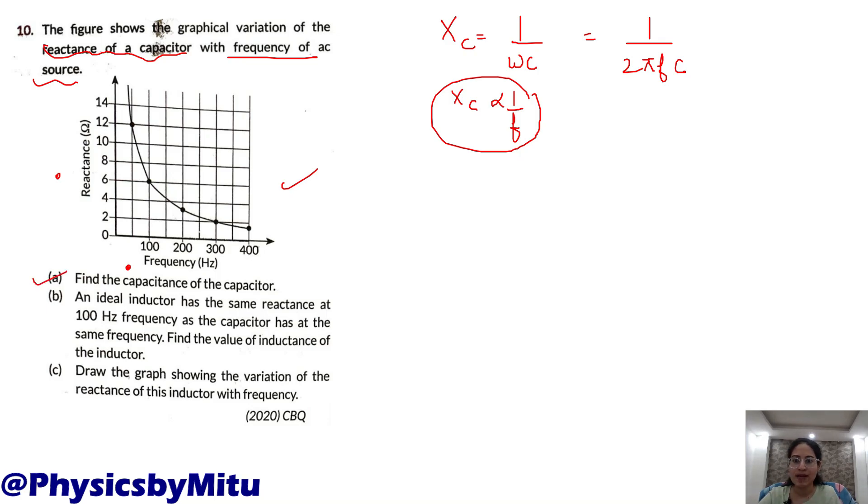You have to find the capacitance of the capacitor. So, I will find C. Now, from this formula, you can write C is equal to 1 by 2 pi f into Xc.